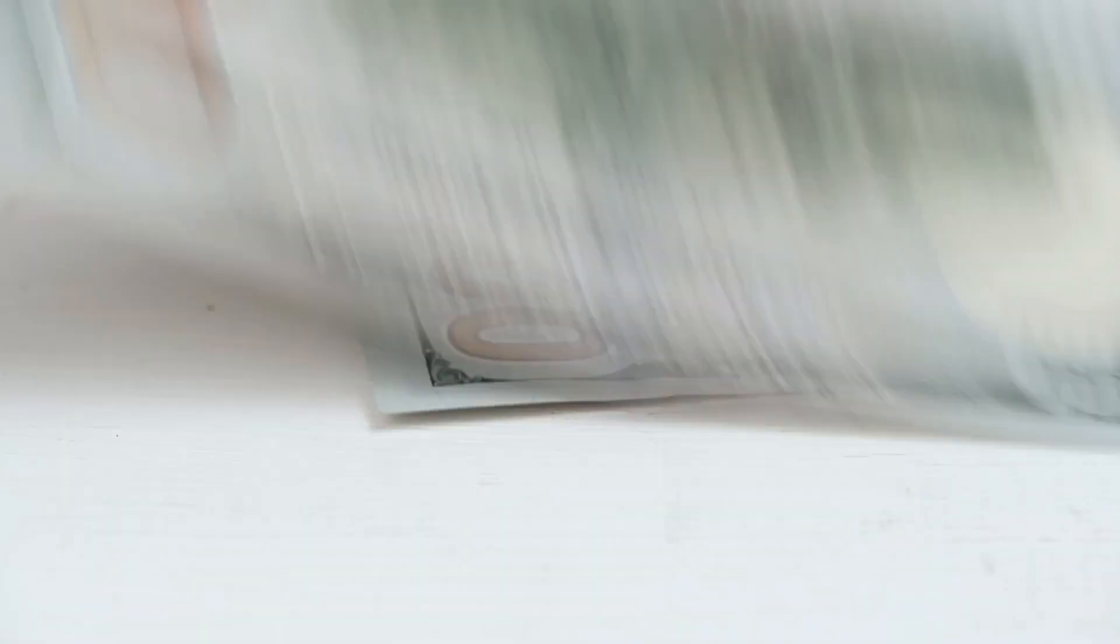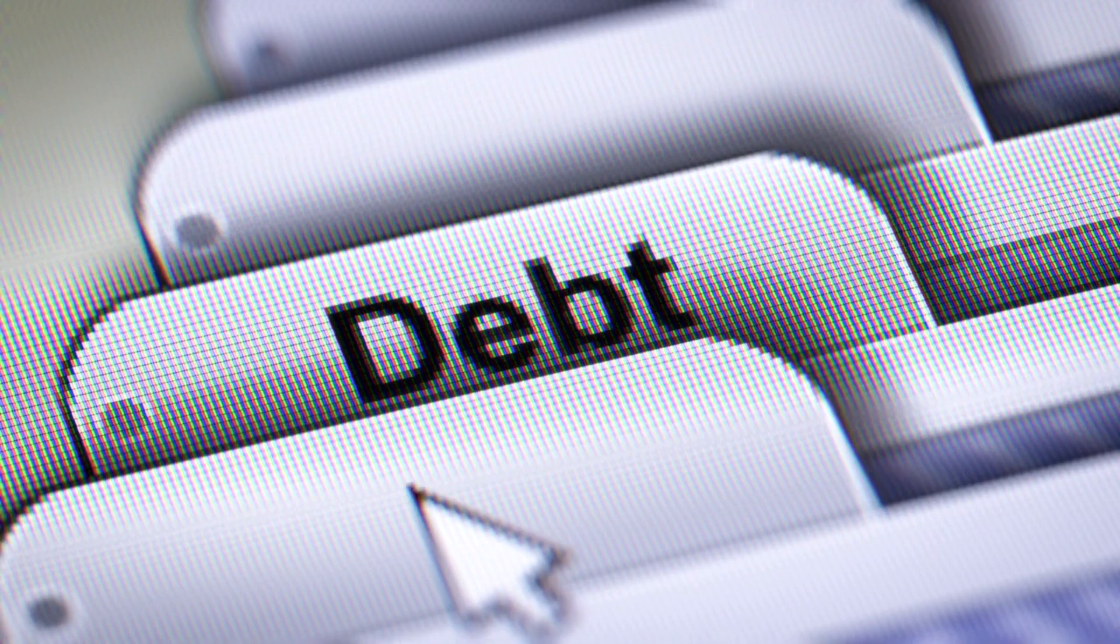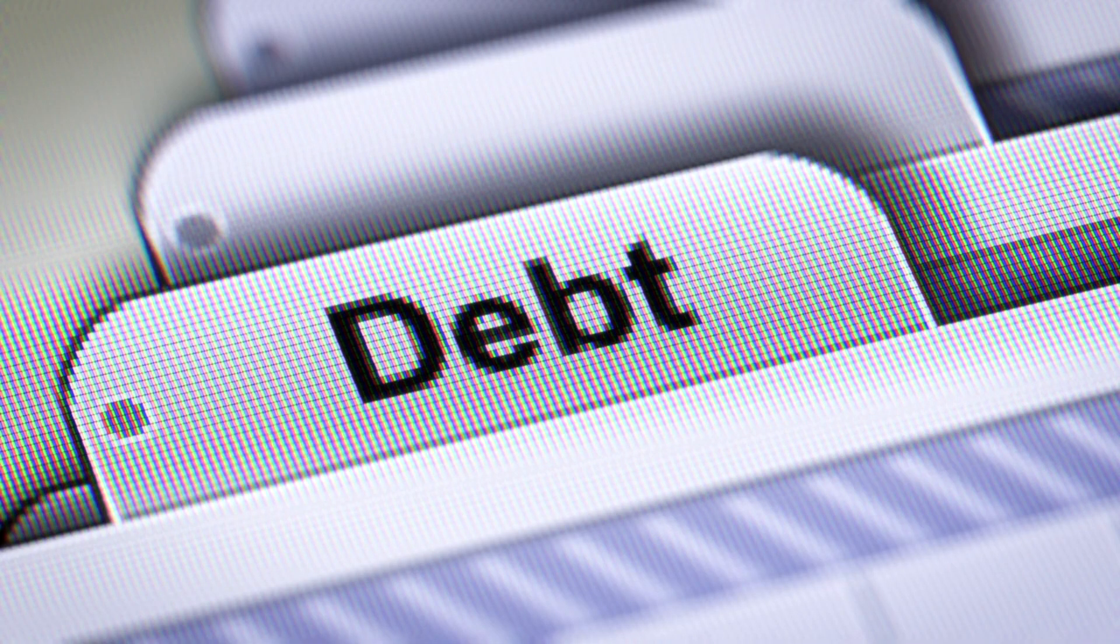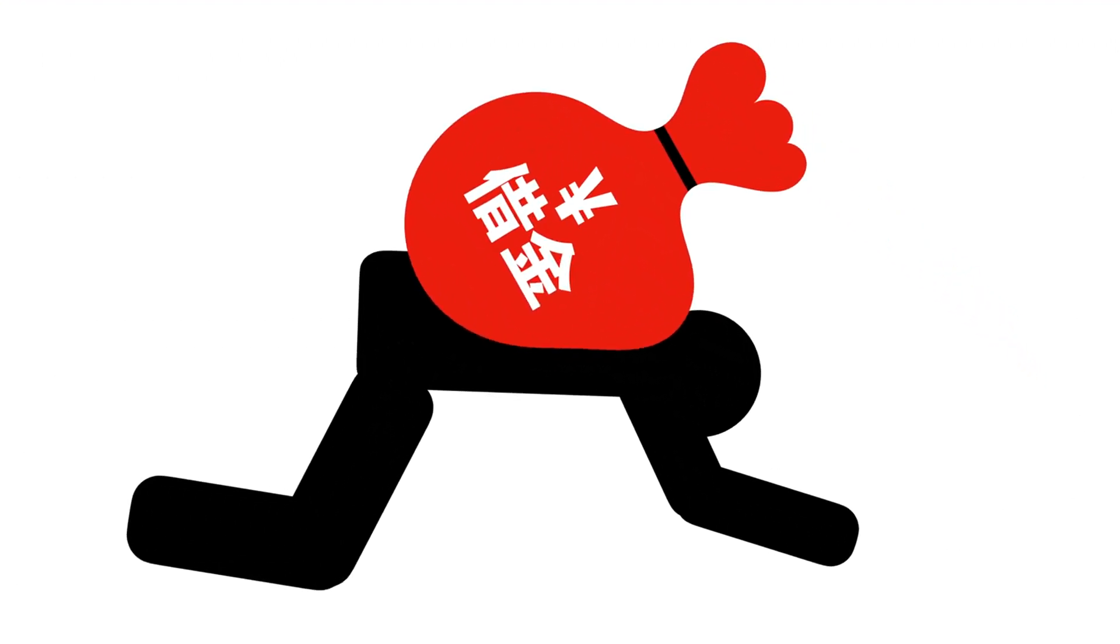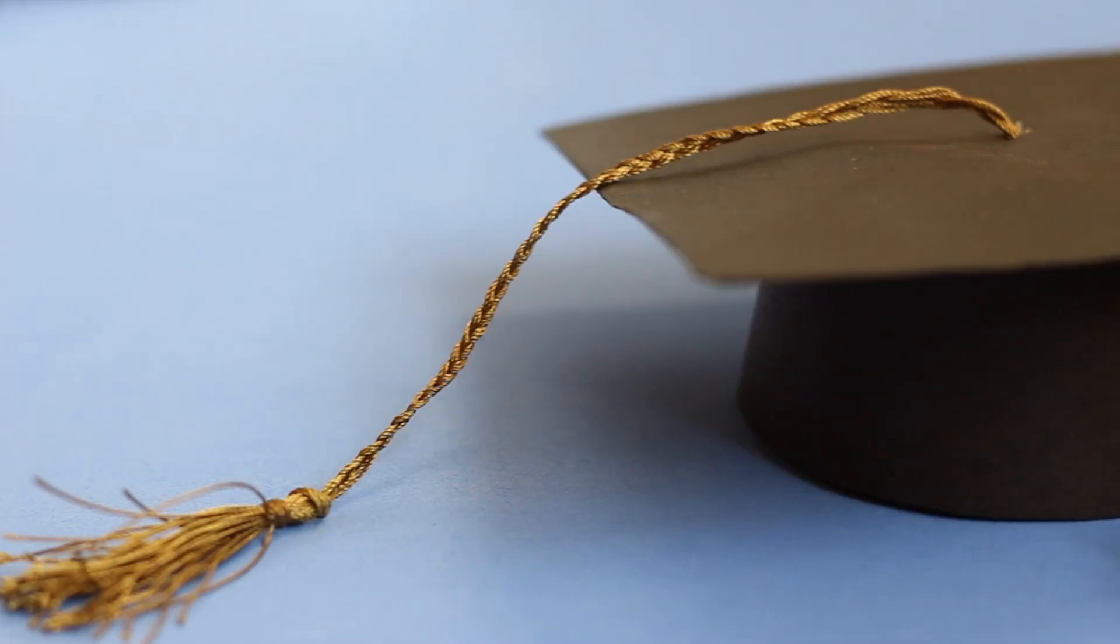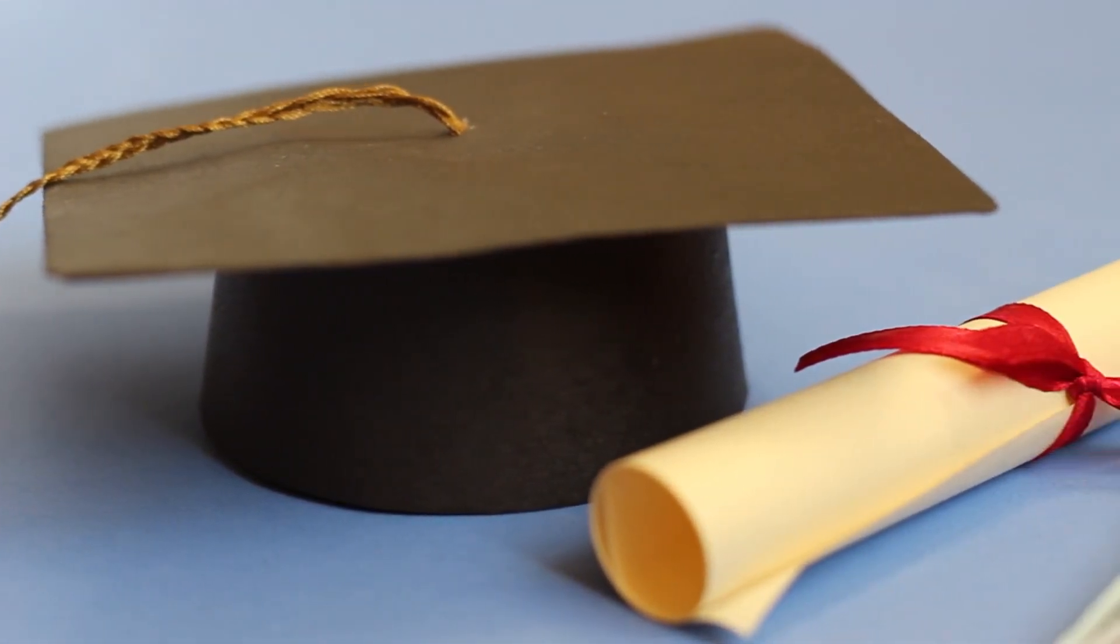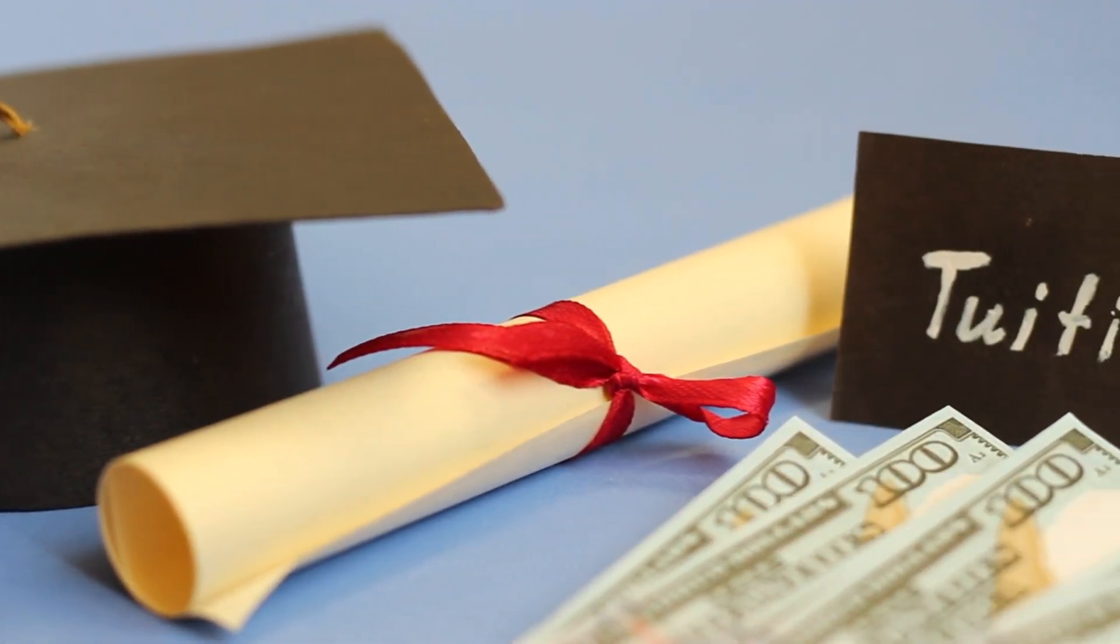Number five, the impact of debt on financial freedom. One crucial aspect of financial education that is often overlooked is understanding the implications of debt. Schools rarely provide comprehensive lessons on different types of debt, how to manage it responsibly, and the long-term consequences of accumulating excessive debt. Many individuals enter adulthood with student loans, credit card debt, or other financial obligations without fully grasping the impact on their financial freedom.